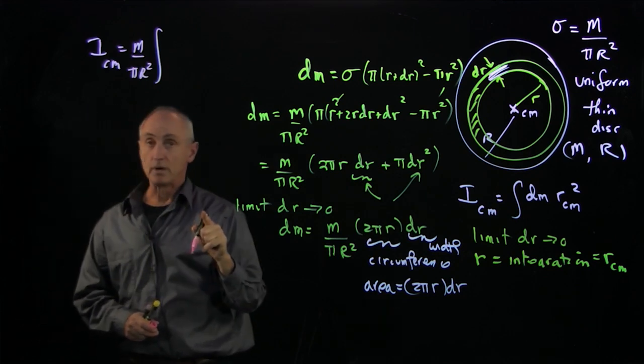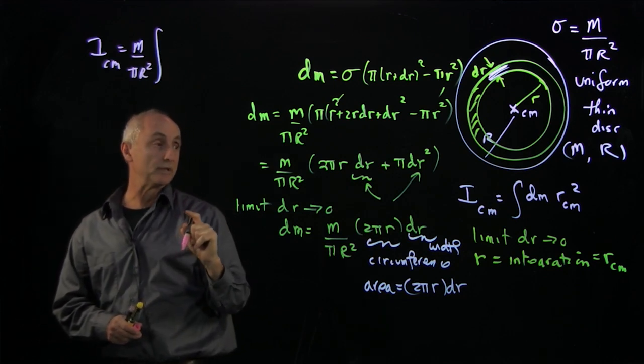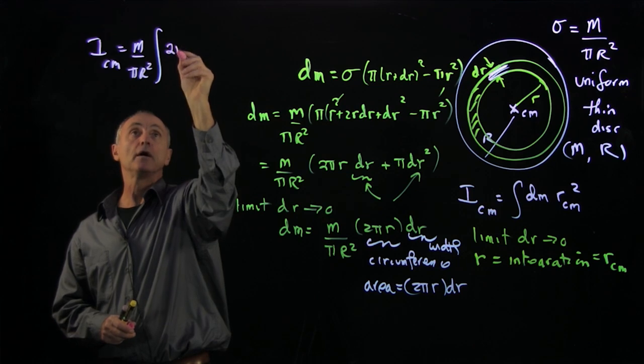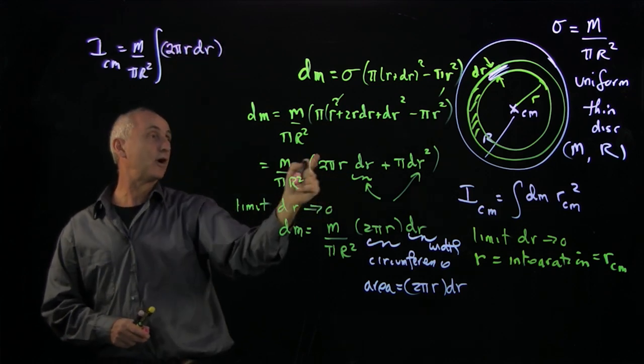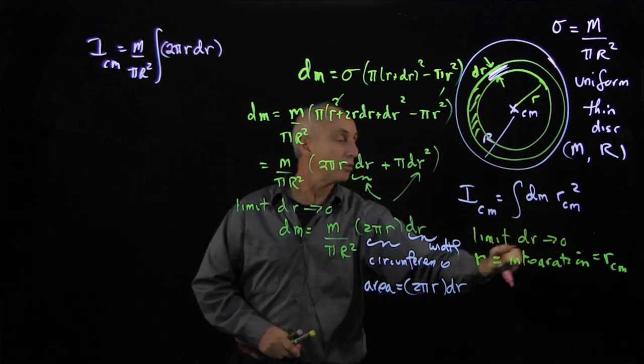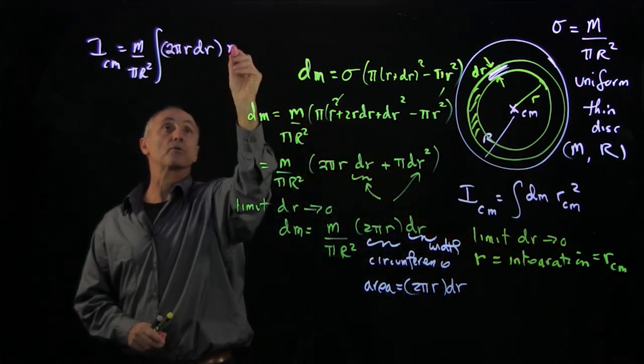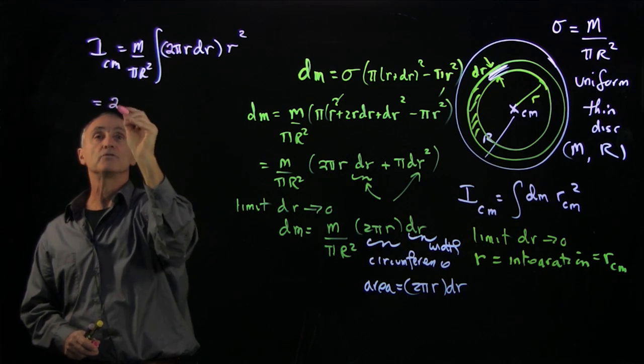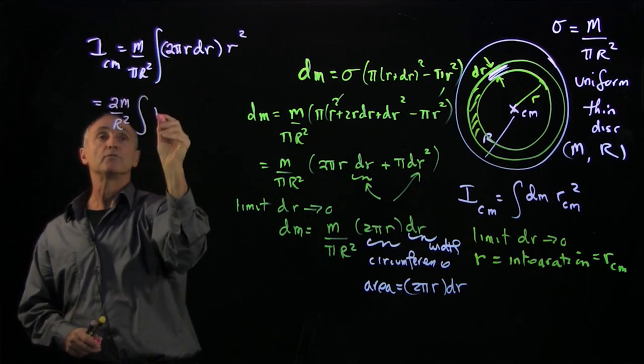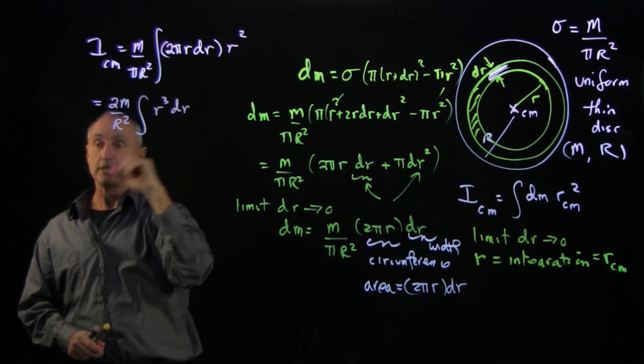Now we're integrating over the body. Let's hold off on the limits for the moment and put our values for dm. That's 2πr dr. And we have our distance squared, which was the radius r².